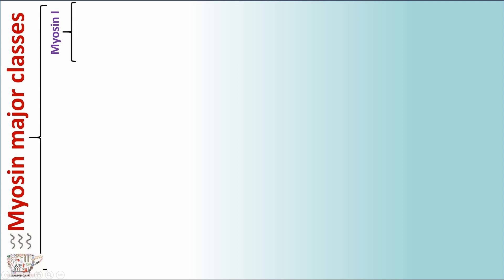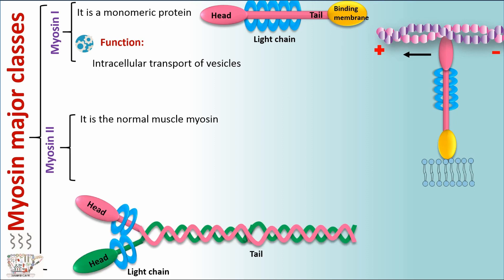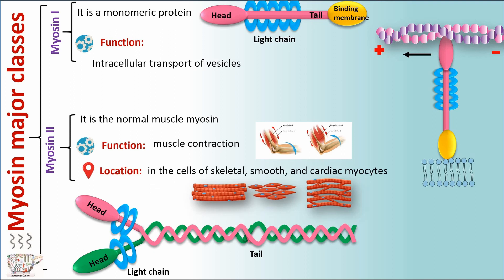Myosin 1 is a monomeric protein that plays a role in intracellular transport of vesicles. Myosin 2 is the normal muscle myosin that plays a role in muscle contraction. It's located in the cells of skeletal, smooth, and cardiac muscles.